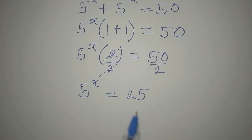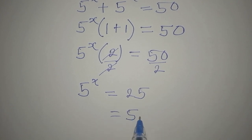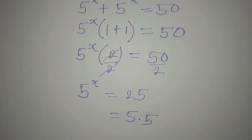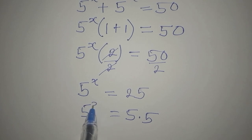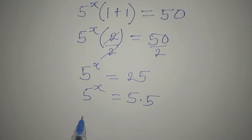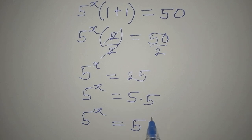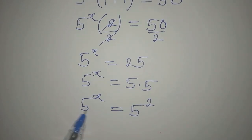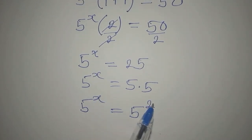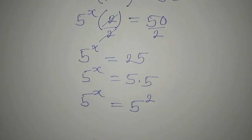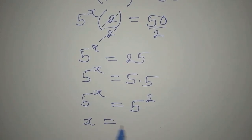Now, 25 is 5 times 5, right? So we have 5 to the power of x, and 5 times 5 is the same thing as 5 squared. Now that the bases are the same, it means the powers must be equal, so our x is equal to 2.